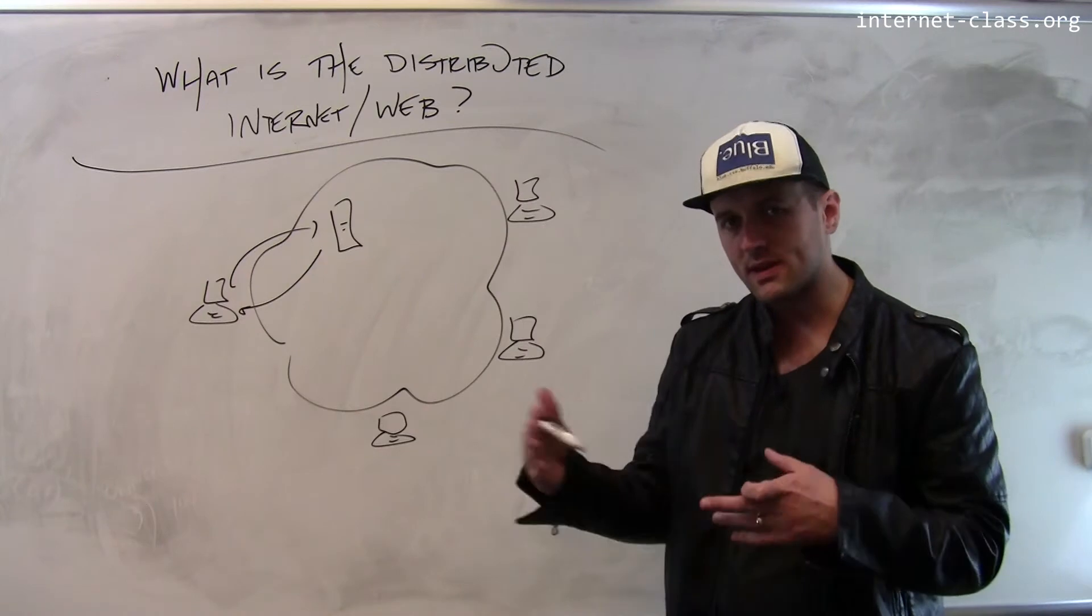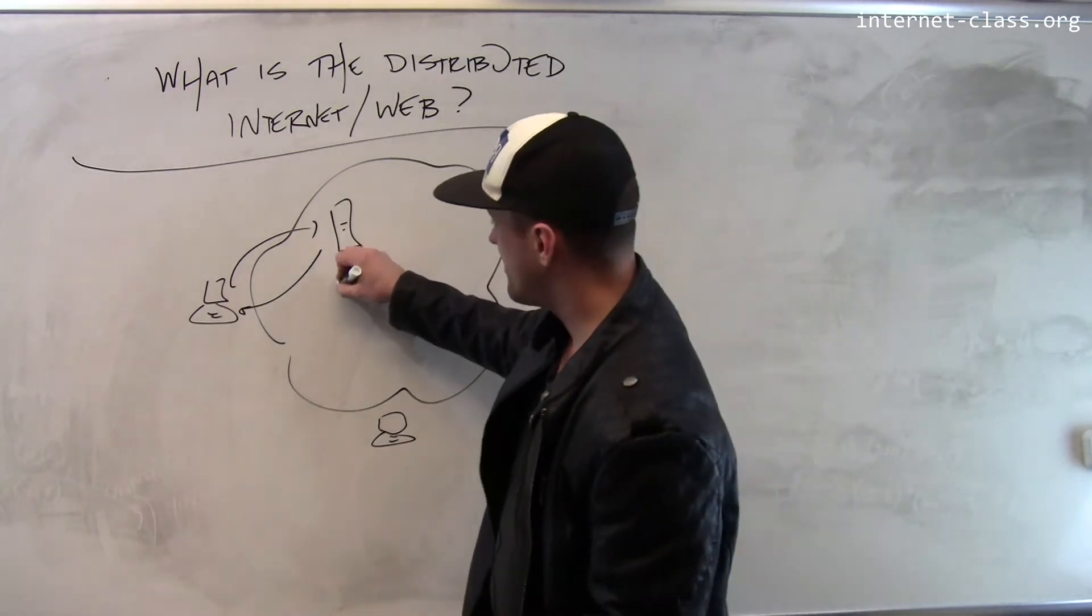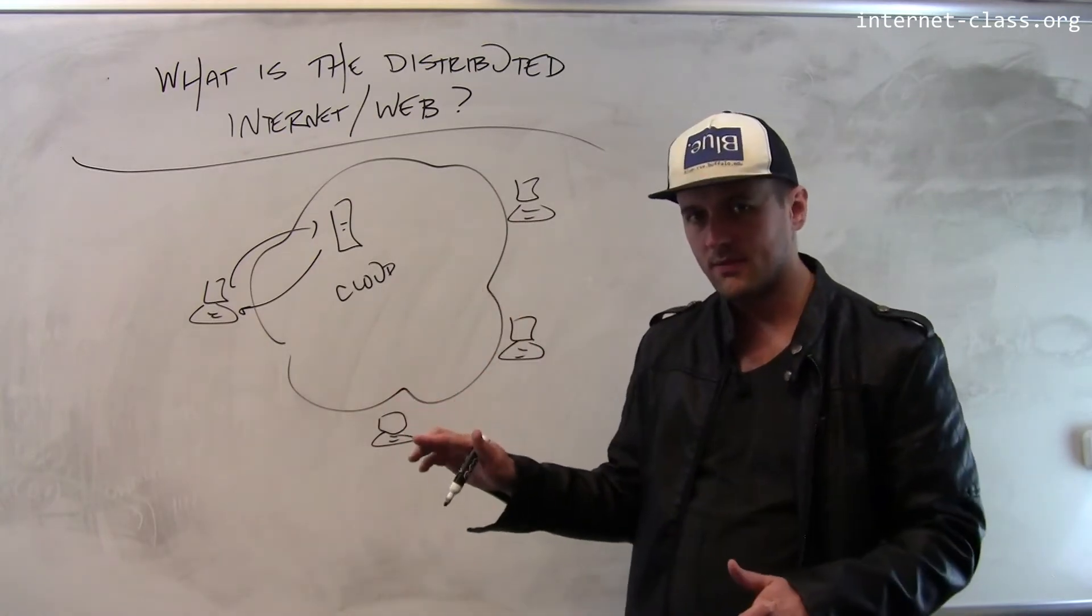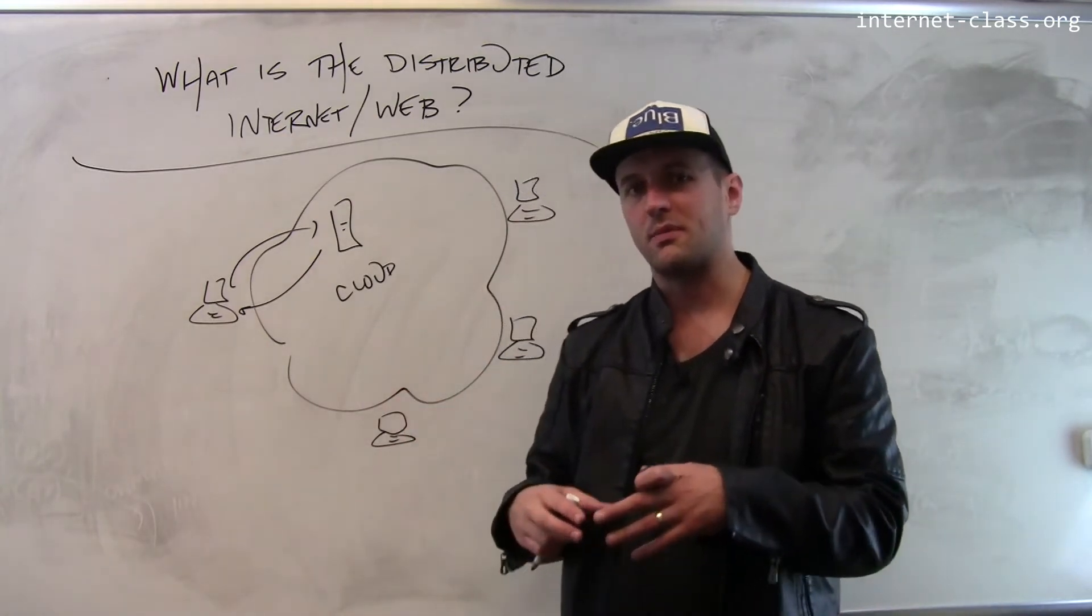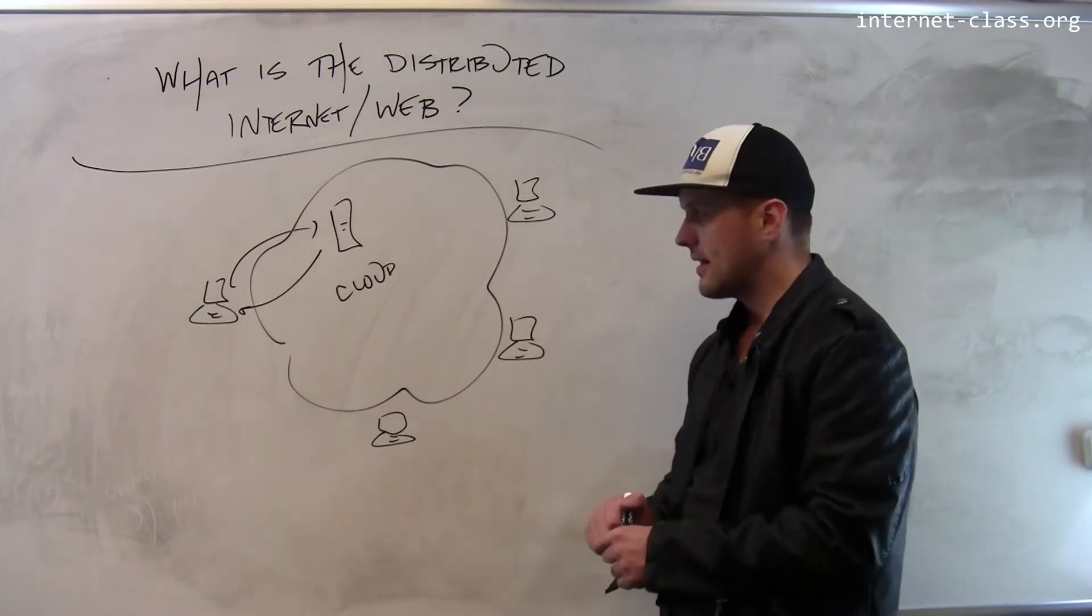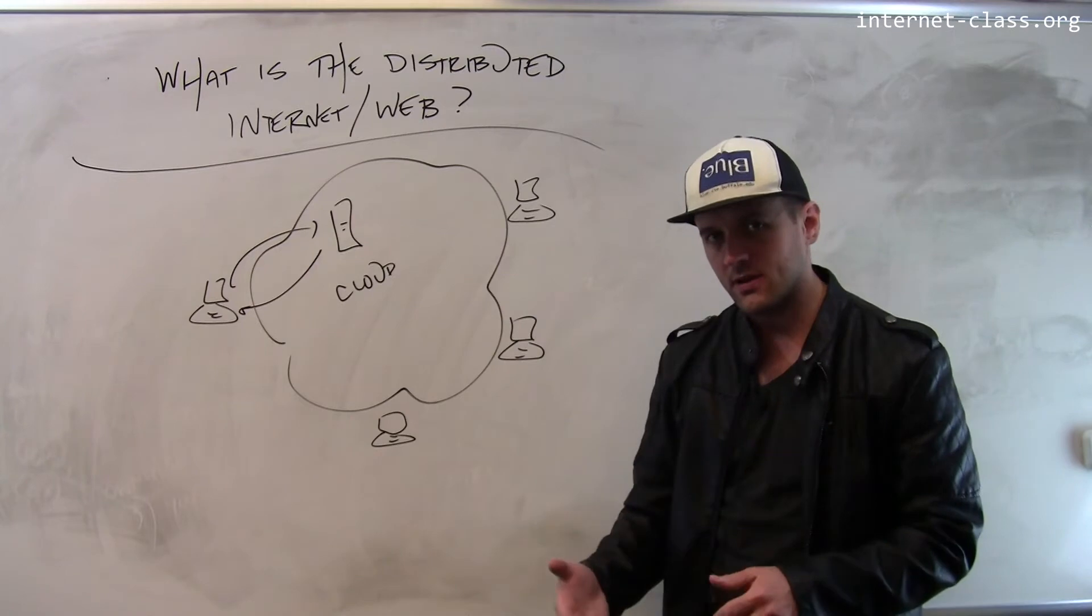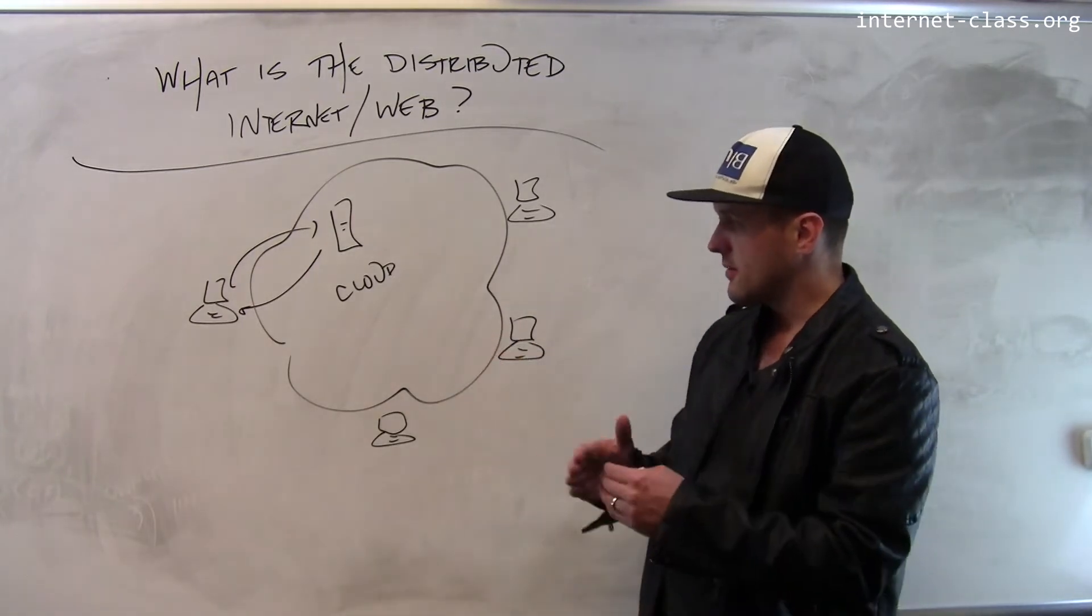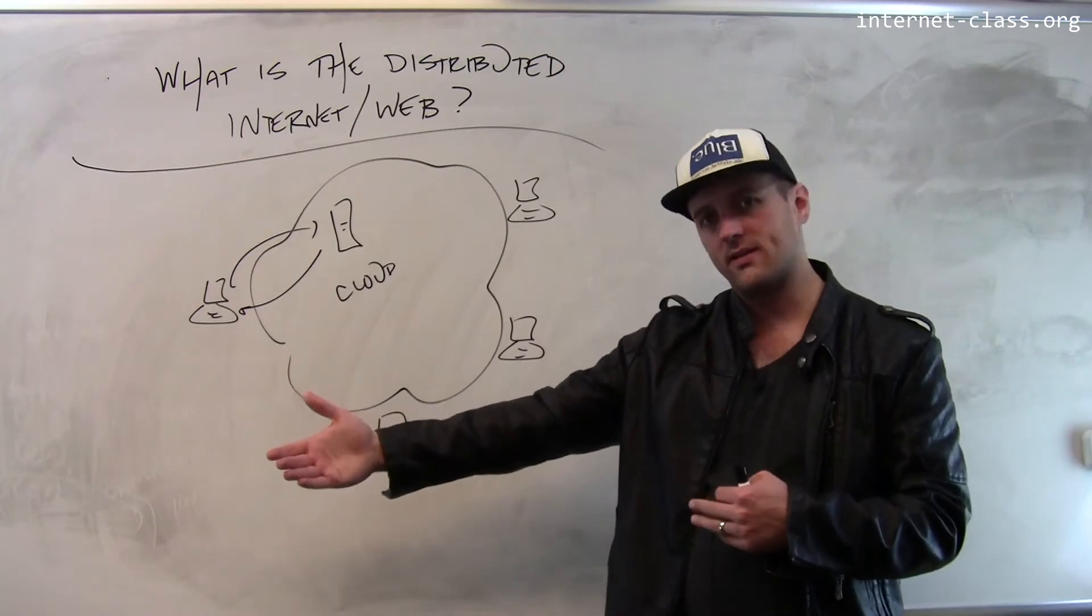On some level, you can think of cloud computing as the ultimate realization of the client-server model, where the server becomes more amorphous, but also extremely powerful, always online, always available, and the clients are allowed to become simpler, lighter, and so forth. And this is, to some degree, one direction that the internet seems to be heading.